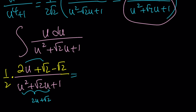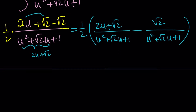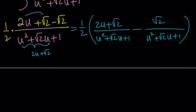So we split into two fractions with the same denominator and integrate separately. The first piece — (2u plus root 2) over the quadratic — is of the form t-prime over t, so its integral is just the natural log of the denominator. Don't forget the 1 half on the outside. Distributing the 1 half gives root 2 over 2 times the second piece, which is a constant over the quadratic.